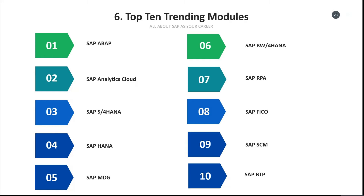The third module is SAP S4 HANA. This module is very famous because it has three versions: the on-premise version, the cloud version, and the hybrid version. SAP S4 HANA is a suite which may contain Simple Logistics, Simple Finance, and so on.